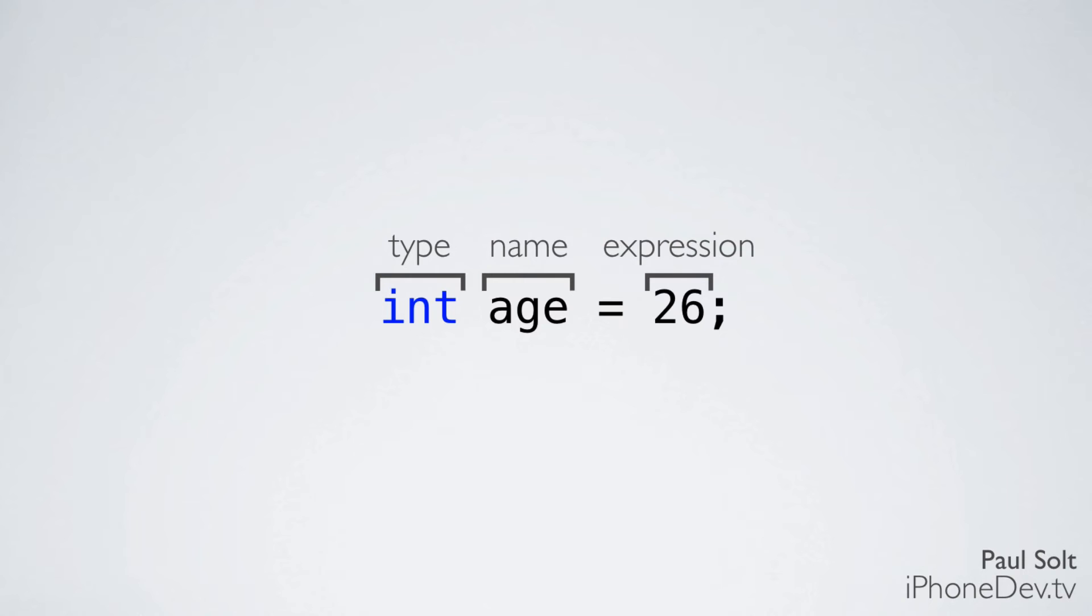The next part is the expression. In this example it's just a single number. But we could do a math expression here as well. So we could do something like 26 plus 1. And that value will get evaluated. So the computer will do the math and then it will use the final value. So 26 plus 1 would be 27. And that would be stored in the age.